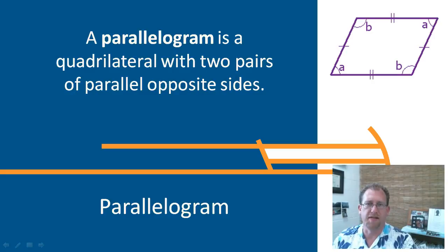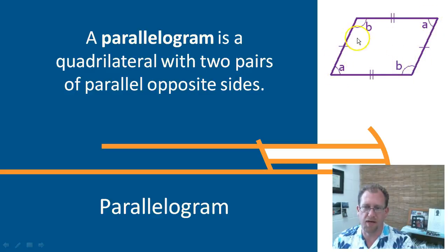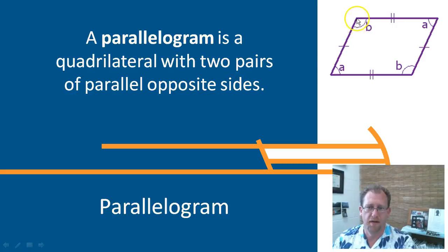The first quadrilateral we're going to talk about is a parallelogram. A parallelogram is a quadrilateral where the opposite sides are congruent and the opposite sides are parallel. That means also that the opposite angles are congruent. So angle A and angle A are the same, angle B and angle B are the same. These two sides of the parallelogram are congruent and parallel, and these two sides are also congruent and parallel.